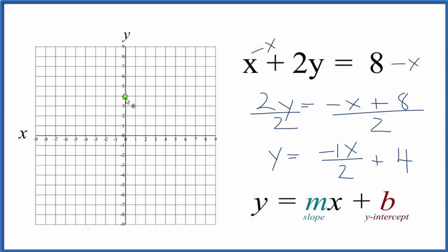So we're going to rise negative 1. So instead of if it was 1, we would go up. But since it's negative, we're going to go down 1, and then we run 1, 2 to the right. Let's do another point. So we go to this point here, and it's negative 1. So we go down 1, and we go to the right 1, 2, and now you can see our line.